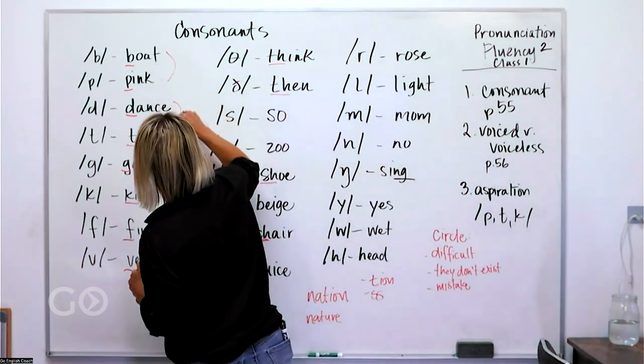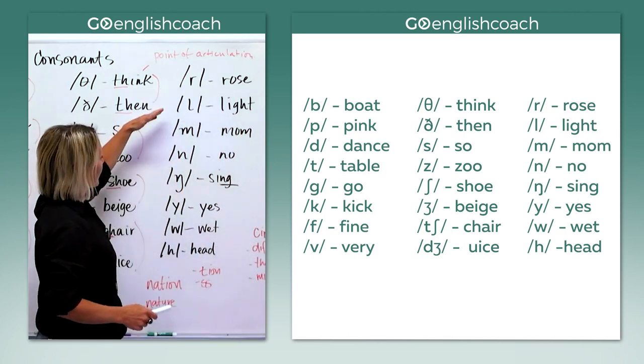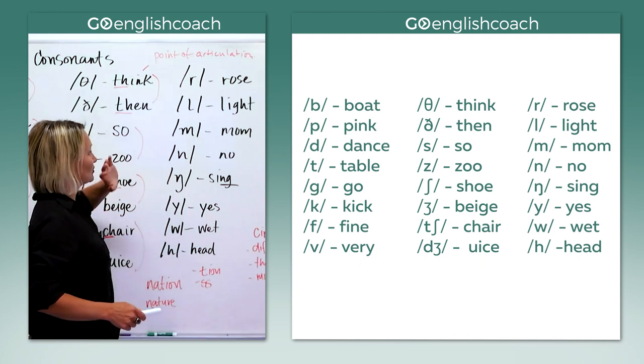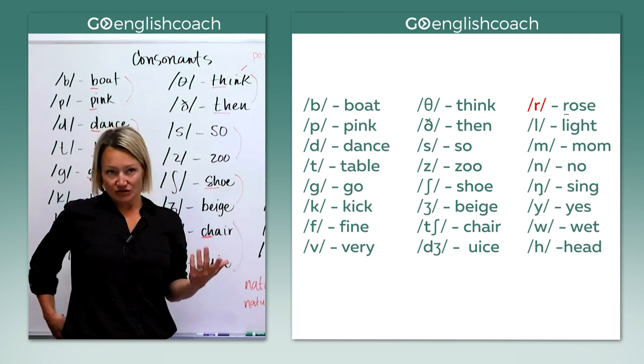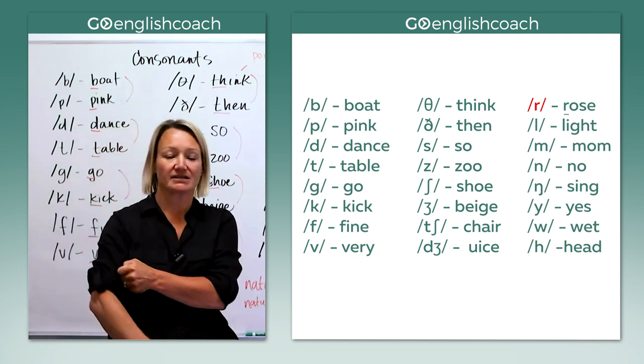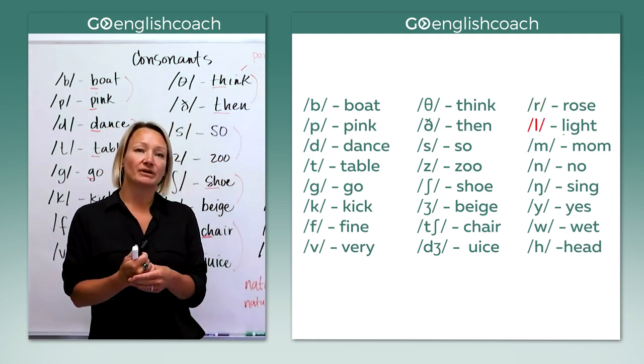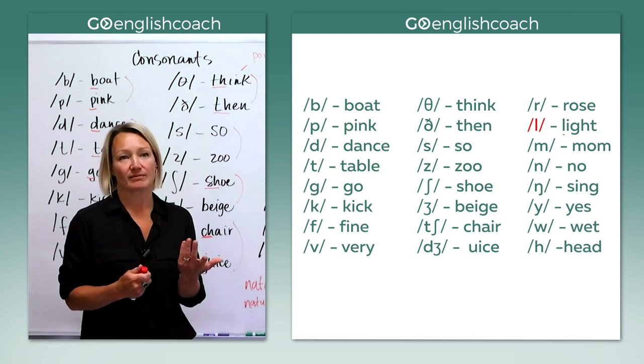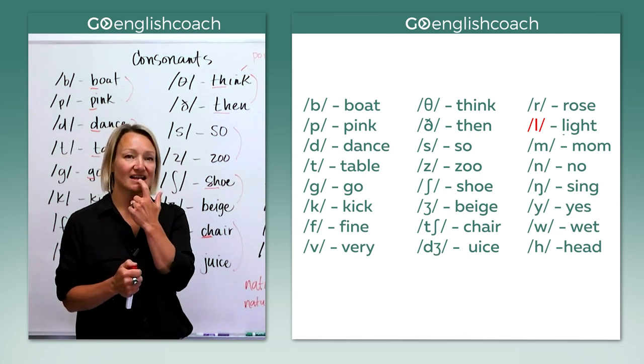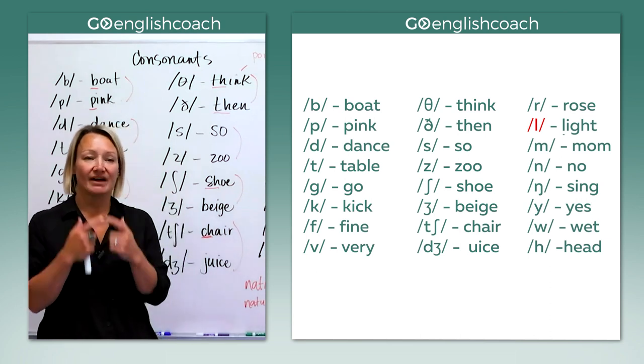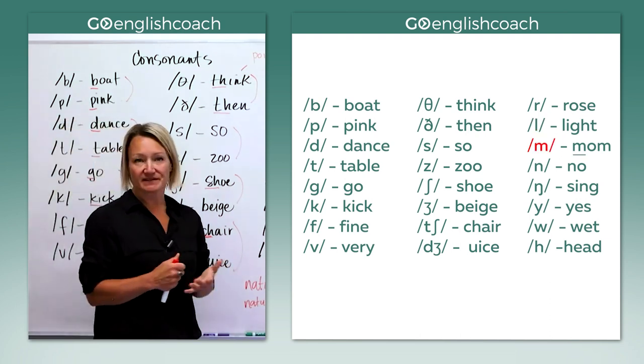And then we've got these over here that don't, these are all kind of paired together because they have the same point of articulation. Let's move over here. So we've got R, L, M, N, NG, Y, W and H. So let's look at these sounds. So the R sound, for some of my students this is a difficult sound and why is that? Because the English R, it does not exist in many other languages. L is another one that is pretty difficult for many students because it maybe just doesn't exist in their first language. So light, light. My tongue is L, right behind my teeth on my top teeth. Light, light.